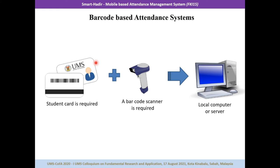For barcode attendance systems, a barcode scanner and a local computer are required to capture student attendance. The technology decodes information from a sequence of bars and spaces printed on the student's card. The barcode format could be Code 49, PDF 417, Data Matrix, or QR code. This technology is widely used in industry sectors. However, a specific barcode reader is required, and staff or students may forget or lose their card, or the barcode print may not be clear.